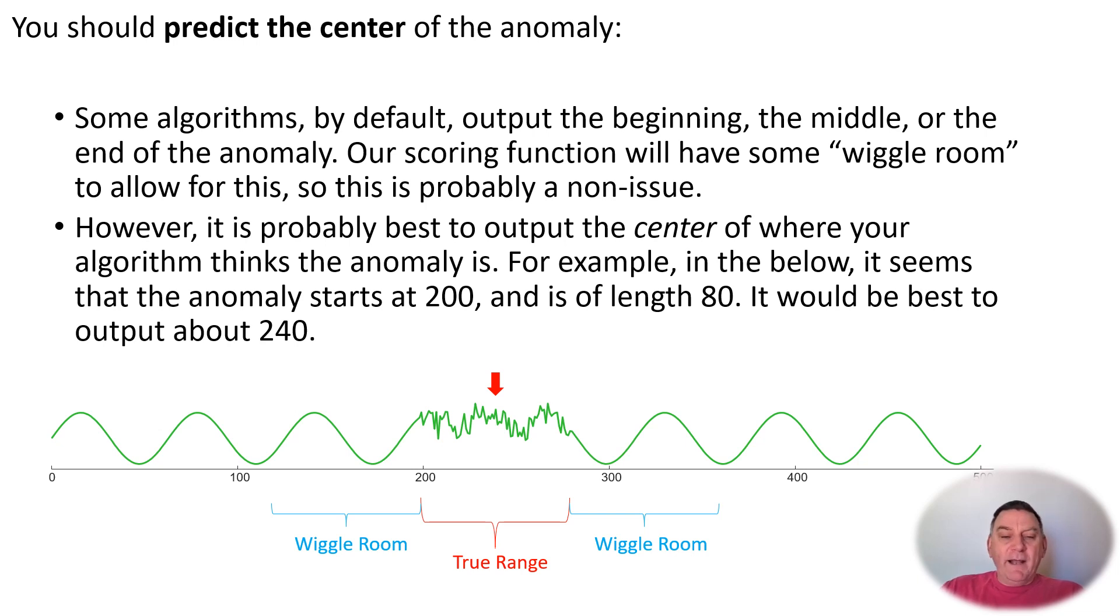We've noticed that many algorithms differ in how they report anomalies. Some report the beginning of the anomaly, some report the end, some report the middle. It probably makes no difference for this contest because our scoring function has wiggle room before and after the anomaly exists. Nevertheless, we think the optimal policy would be for any algorithm to predict the center location of where you think the anomaly might be.